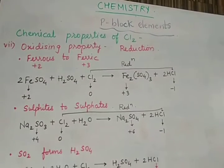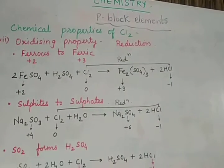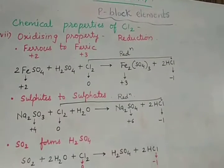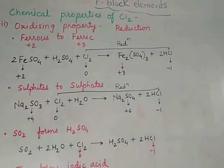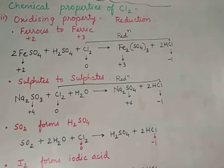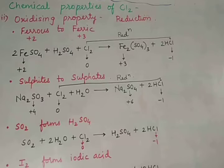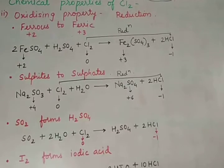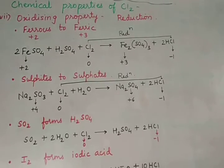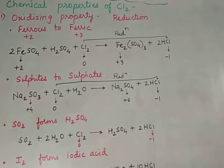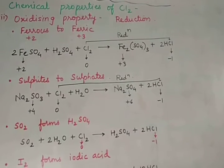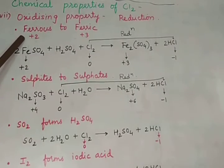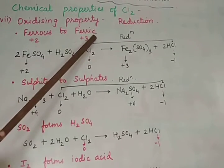We continue towards the chemical properties of chlorine, that is the reactions of chlorine. The seventh reaction is the oxidizing property of chlorine. Oxidizing property means chlorine acts as an oxidizing agent, that is it has a tendency to undergo reduction. We have to study four reactions showing how it undergoes reduction, which is its oxidizing property.